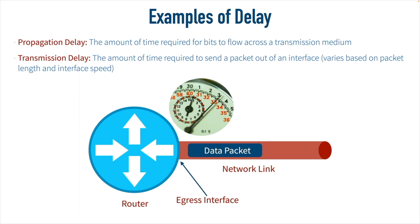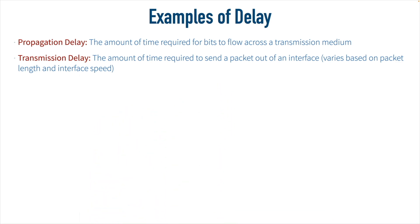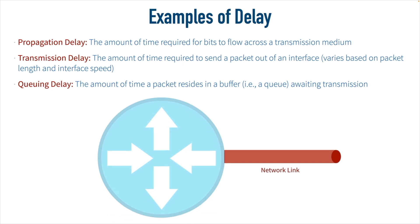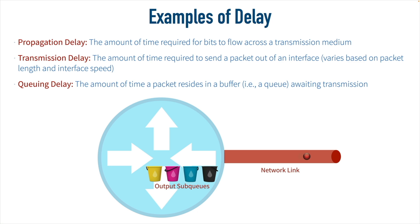We also might run into queuing delay. Sometimes a router or switch is receiving data faster than it can be transmitted. That router or switch is going to have a buffer or queue on that output interface, and it can divide that queue into sub-queues. We could configure quality of service to prioritize one queue above the others, or give a minimum bandwidth guarantee to different queues based on traffic priority. If a packet comes into the router and there's not enough bandwidth to send it immediately, it gets placed in one of those sub-queues. The time it resides in that sub-queue is called queuing delay. When bandwidth is available and based on QoS settings, the router eventually takes that packet out of its sub-queue and sends it out on the wire.